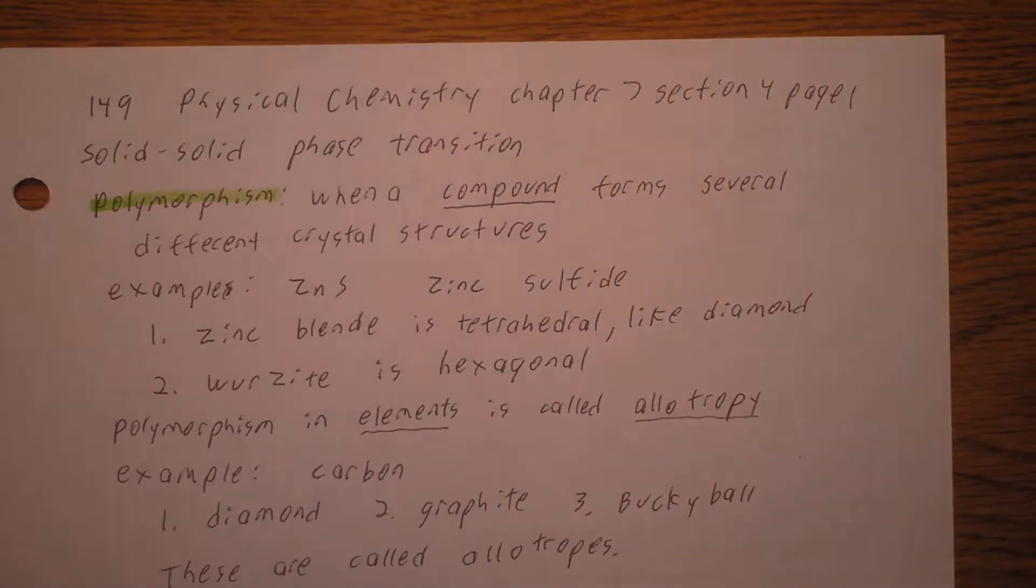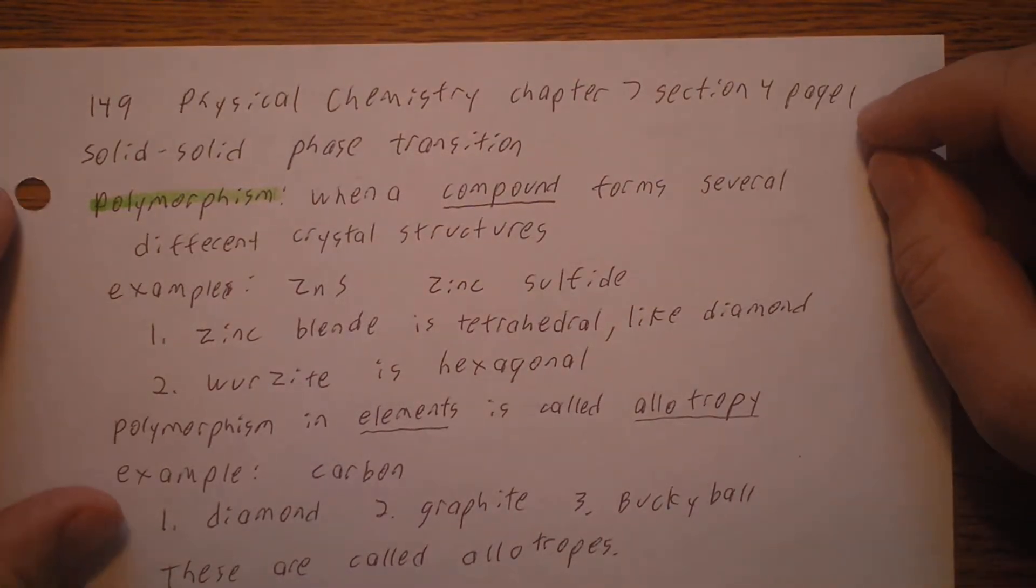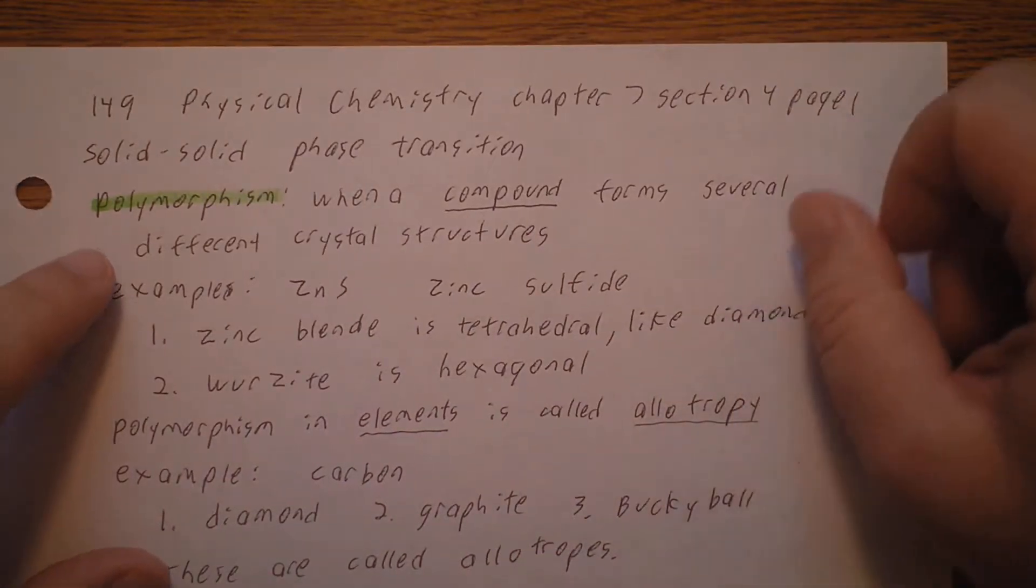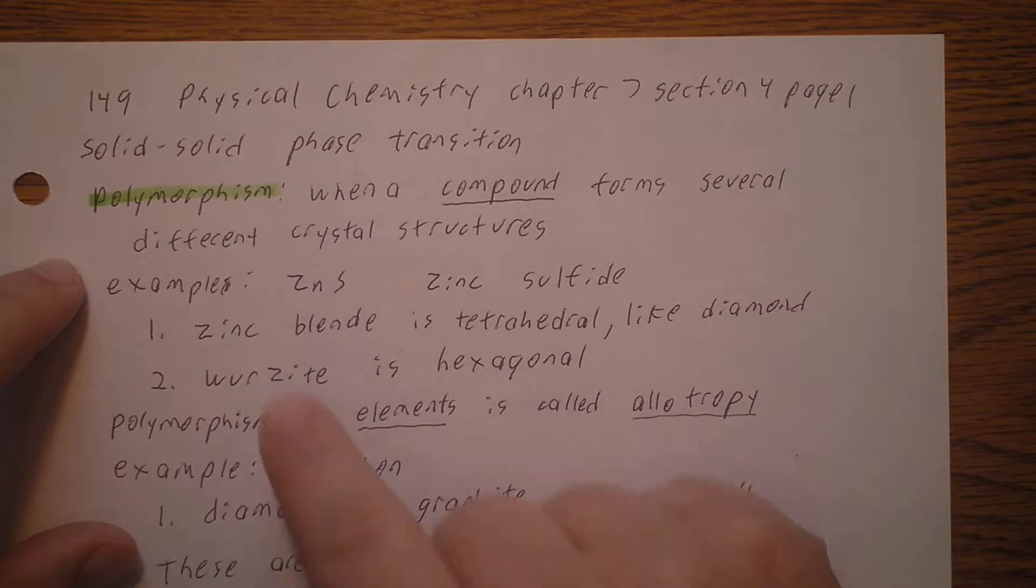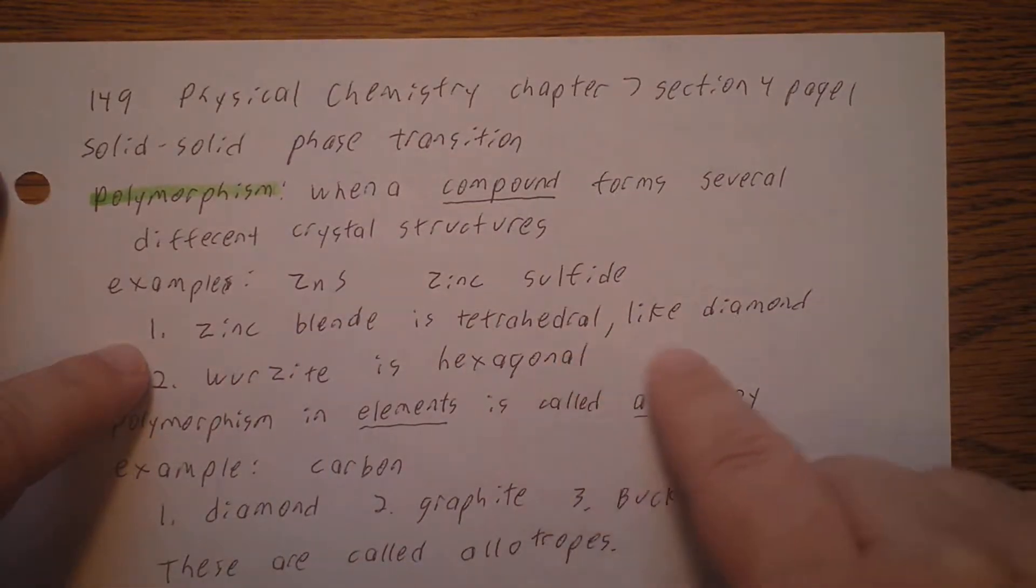Continuing Physical Chemistry Chapter 7, we're beginning Section 4 now. First, we're going to talk about a solid-solid phase transition. Polymorphism is when a compound forms several different crystal structures. For example, zinc sulfide. Zinc blend is tetrahedral, kind of like diamond. But wurtzite is hexagonal.